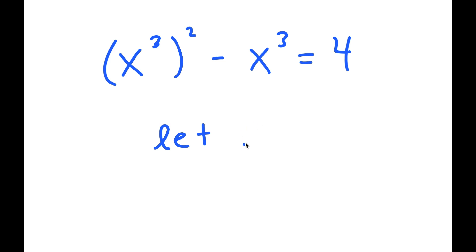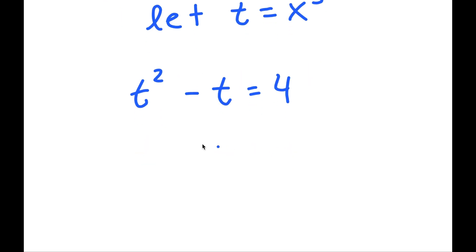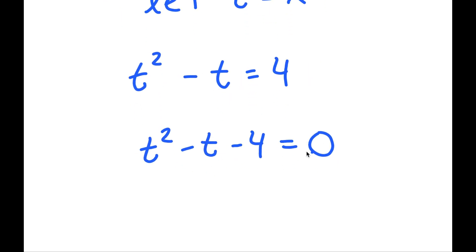From here, I'm going to let the variable t equal to x to the power of 3. So if I substitute in t for x to the power of 3, I get t squared minus t is equal to 4, meaning t squared minus t minus 4 is equal to 0.